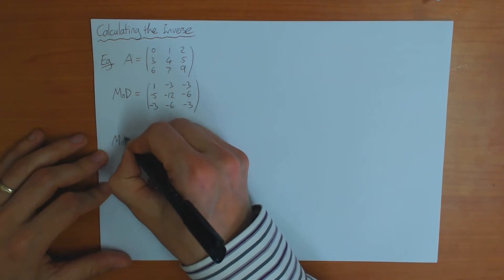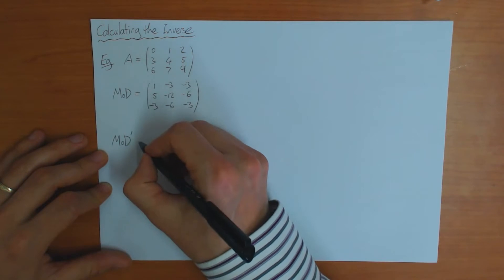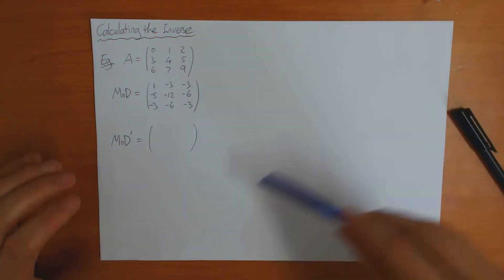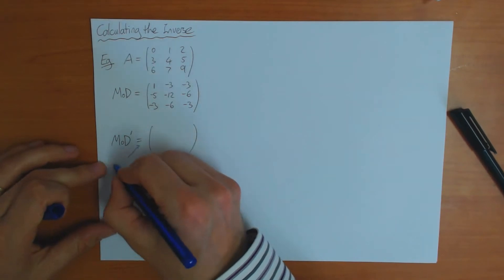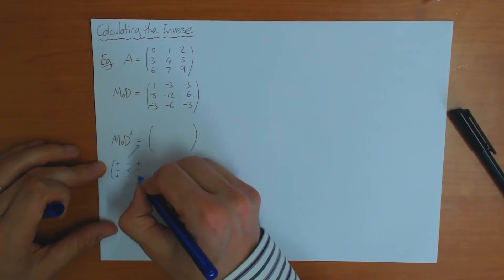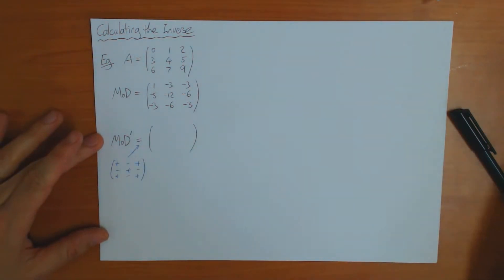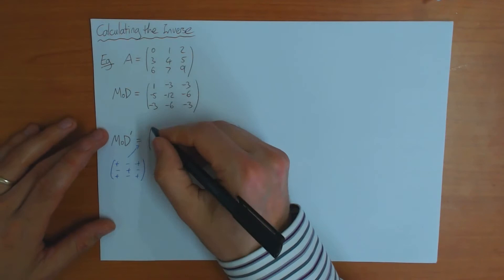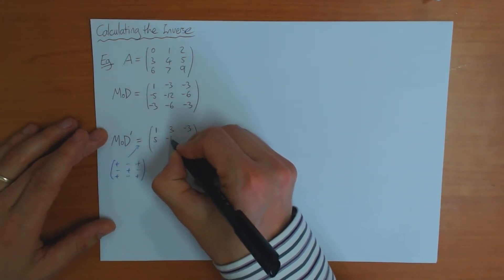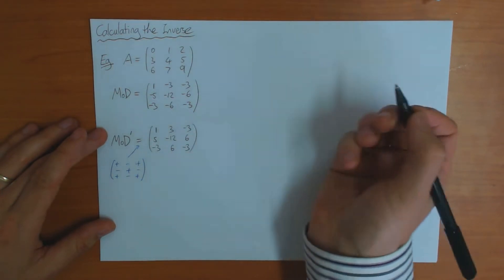To find the determinant, you need to multiply this by the chessboard, which is what I called MOD prime. The chessboard is plus, minus, plus... so you need to multiply 4 elements by minus 1. That gives you: 1, 3, -3, 5, -12, 6, -3, 6, -3.